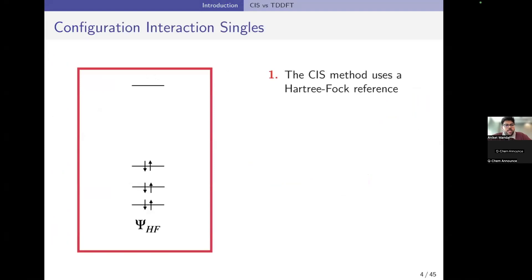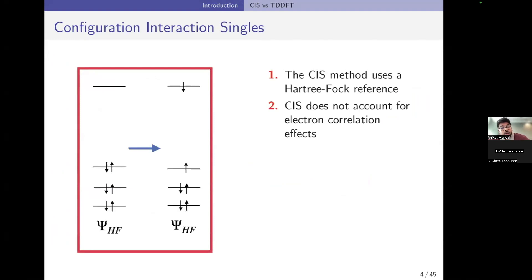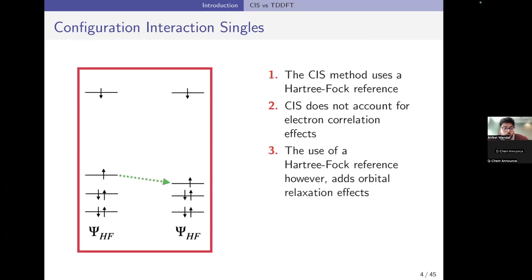The configuration interaction singles method uses a Hartree-Fock wave function as a reference on which it does excitations. However, since it uses a Hartree-Fock wave function, CI singles does not account for electron correlation effects, which is a drawback because for certain systems those effects play a major role. However, the use of a Hartree-Fock reference adds orbital relaxation effects, which, as you will see in the next few slides, especially for x-ray spectroscopy, have a very important role in the accuracy of the method.